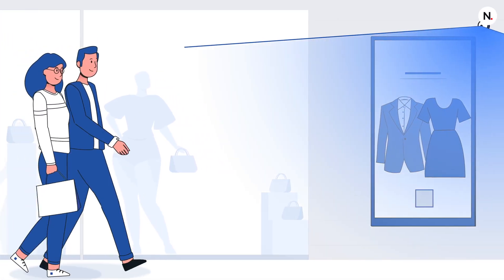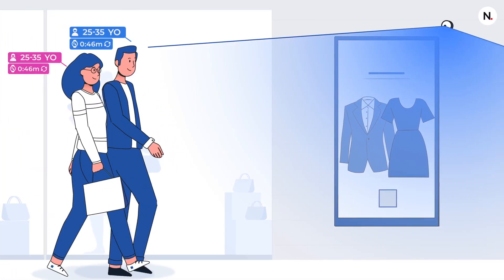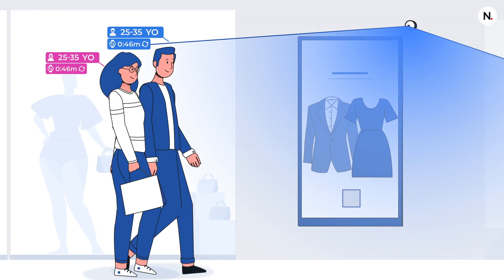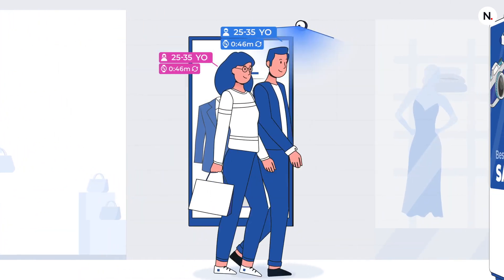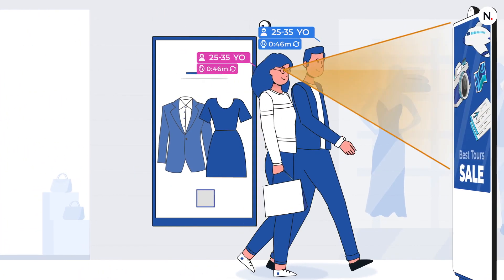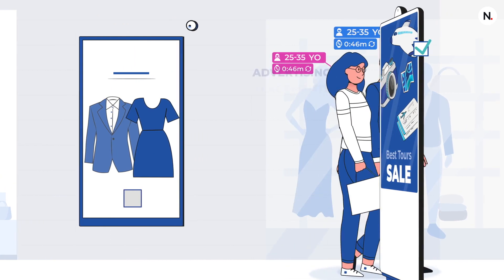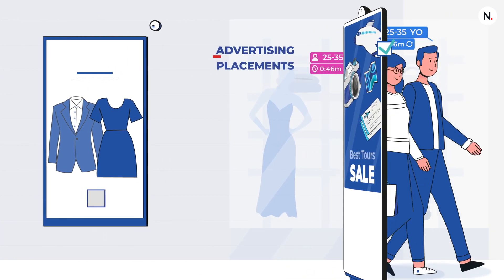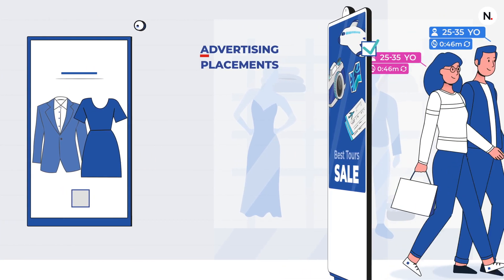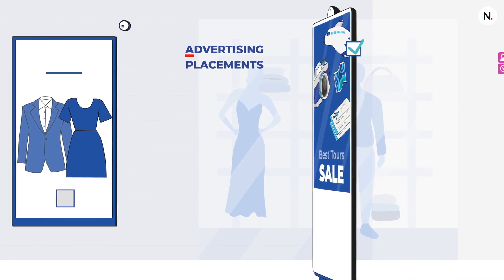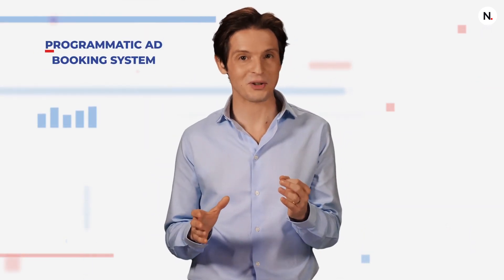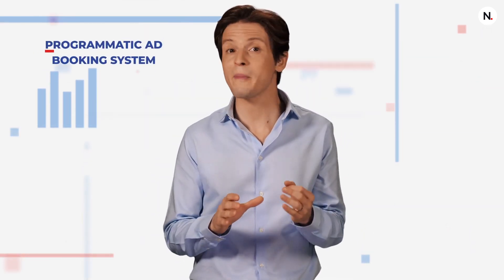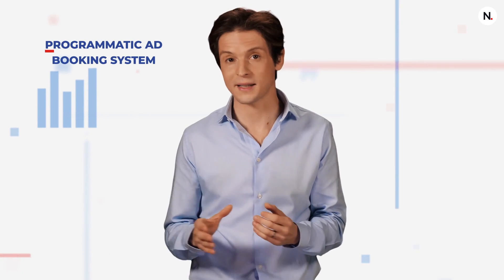AquaGee is the perfect solution for any out-of-home application when combined with the Navori QL digital signage platform. You can assess advertising placements based on their relevance to the content or the audience looking at the screen. You can also enhance your advertising campaigns by sharing your metrics with a programmatic ad booking system.